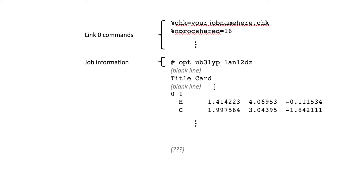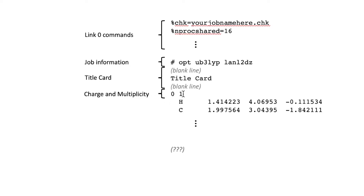Another blank line, and then you have the charge and multiplicity, which should be pretty straightforward. Is it a charged molecule? No, then it's 0. Is it an excited state or a radical? No, then it's a singlet. You can just look it up. For most intents and purposes it's just going to be 0, 1.